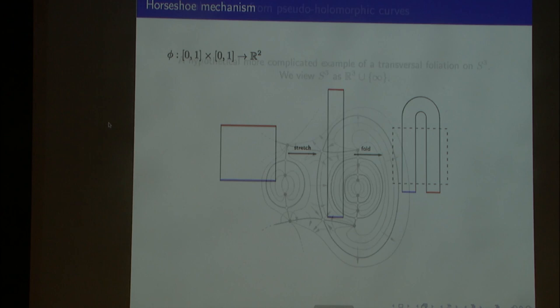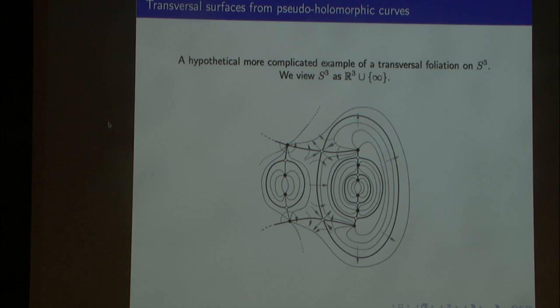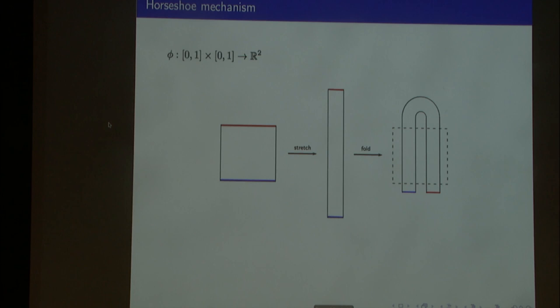I showed one piece of what a transverse foliation could look like. In general, viewing S3 — which is what a star-shaped hypersurface in R4 would be topologically — as R3 union a point at infinity, it could look something like this, with arrows indicating where the vector field is going. To explain what I'll do by following the flow between these different regions, I'd like to recall a classical mechanism going back to Smale — the mechanism of a horseshoe. We have a map from a box consisting of a composition of two maps: the first is a linear one that stretches, and the second folds it.